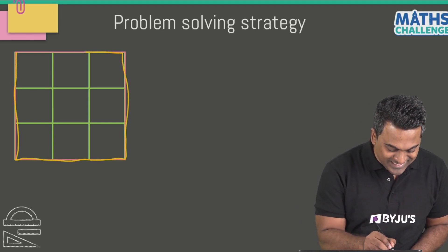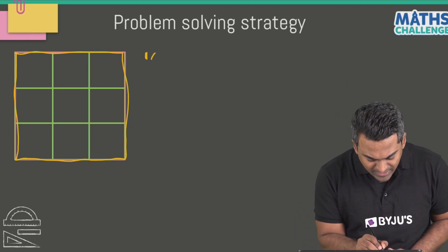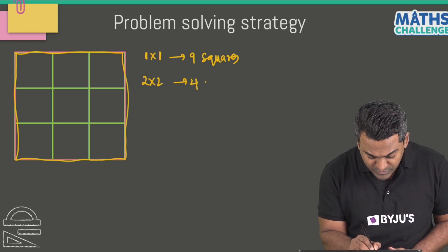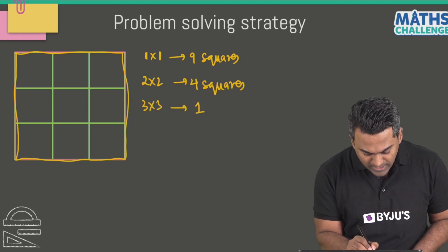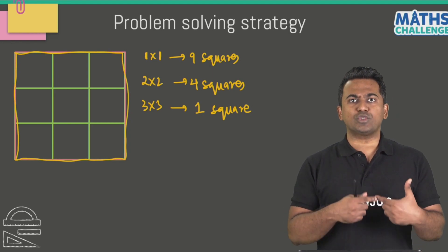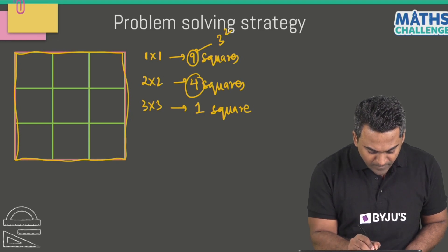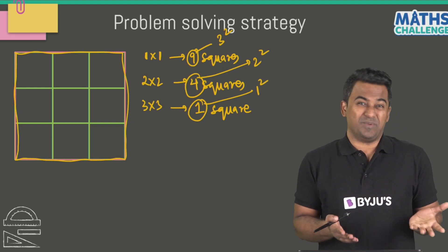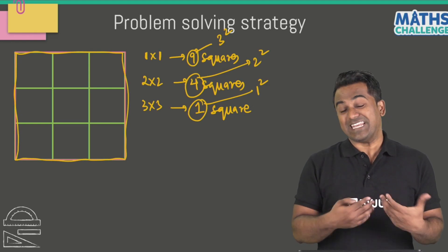Lastly, there is also a 3 by 3 square — and of course there's just one. So to summarize the 3 by 3 grid: nine 1 by 1 squares, four 2 by 2 squares, and one 3 by 3 square. We also have square numbers here — 9 is 3 squared, 4 is 2 squared, and 1 is 1 squared. Could it really be that simple? Counting squares points us to square numbers in math!